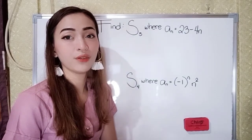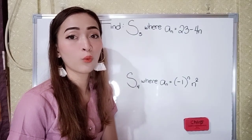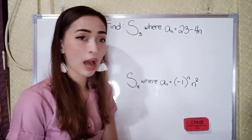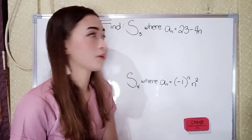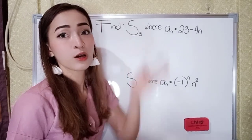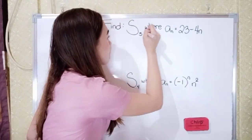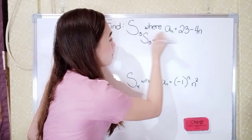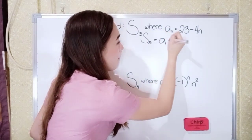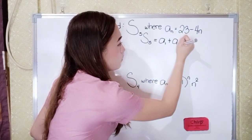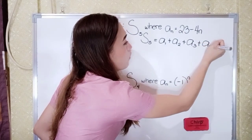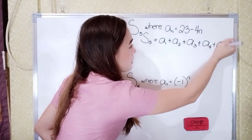For example, we have here: find S sub 5, where A sub N is equal to 23 minus 4N. Our N here is 5. Now what we're going to do is just get this series. That will become S sub 5 equals A sub 1 plus A sub 2 plus A sub 3 plus A sub 4 until A sub 5.